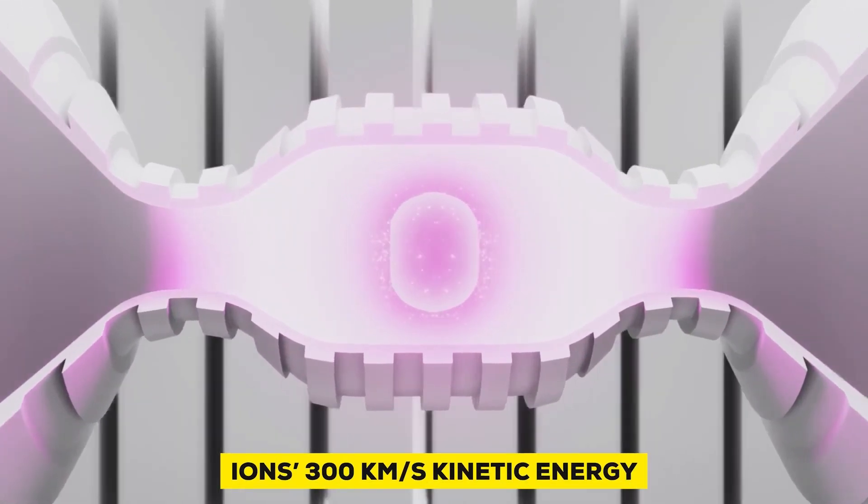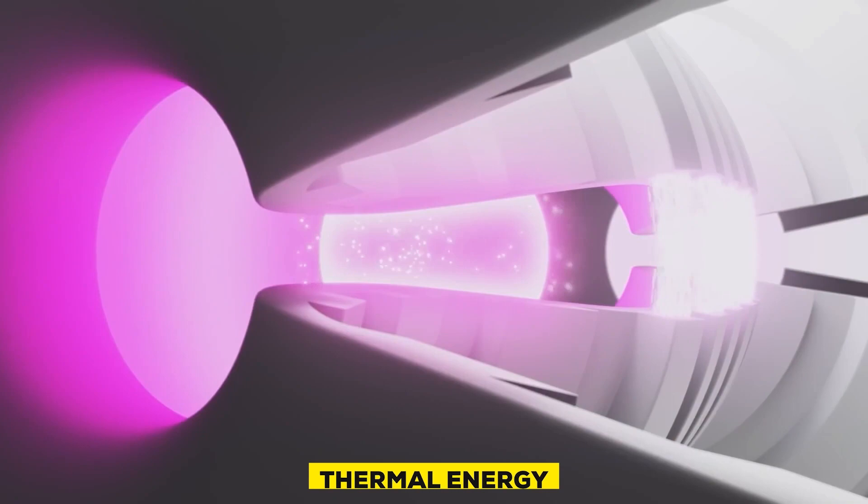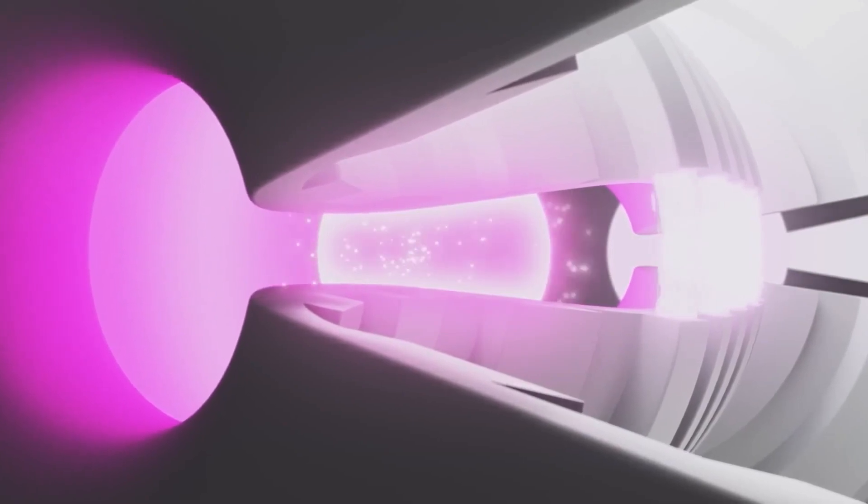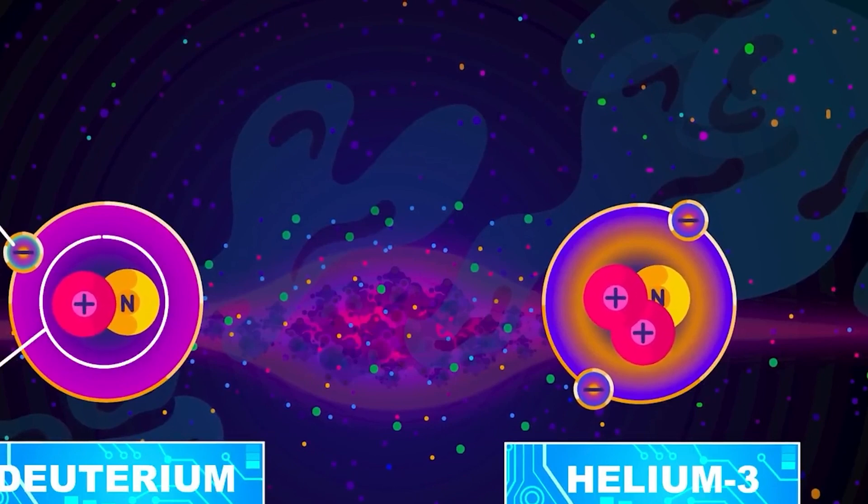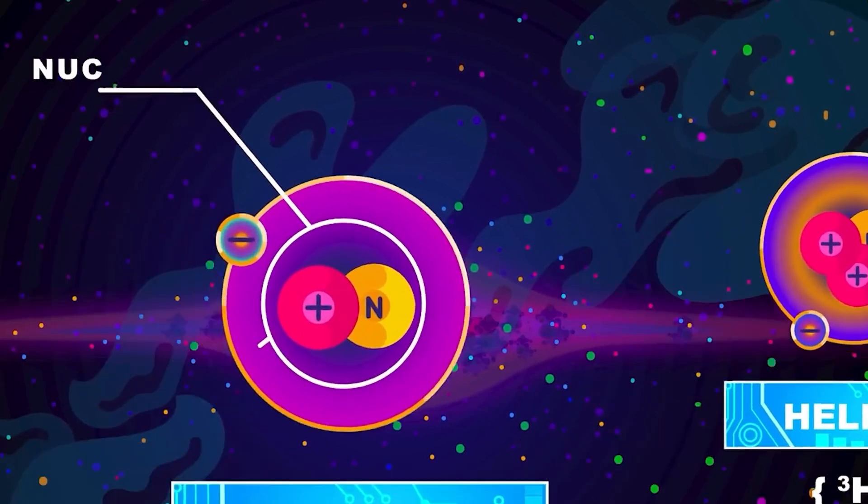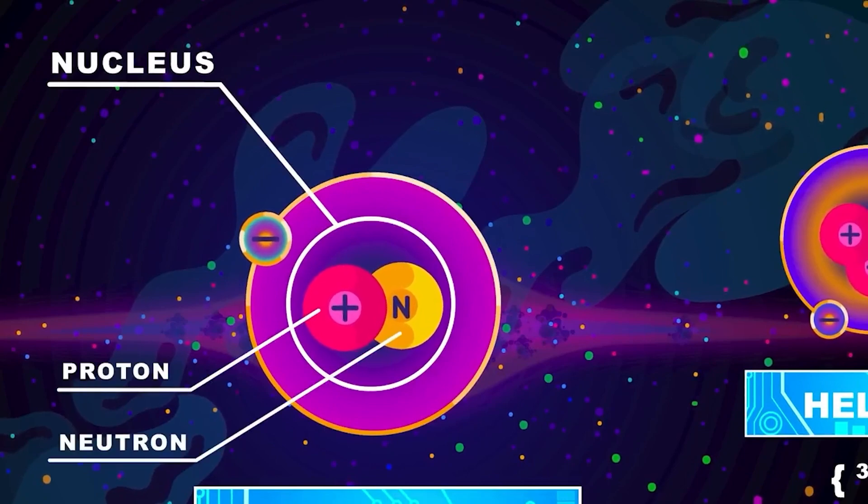As the ions' 300 kilometers per second kinetic energy is transformed into thermal energy, the plasma temperature rises by tens of millions of degrees. This is hot enough to overcome the electromagnetic repulsion holding the ions apart, allowing them to combine and create new atoms, releasing tremendous energy.